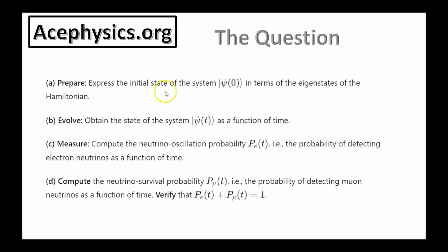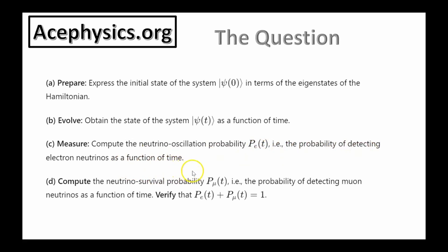Part A: express the initial state of the system in terms of the eigenstates of the Hamiltonian. Part B: obtain the state of the system psi of t as a function of time. Part C: compute the neutrino oscillation probability — the probability of detecting the electron neutrino as a function of time. Part D: compute the neutrino survival probability — the probability of detecting the muon neutrino as a function of time.